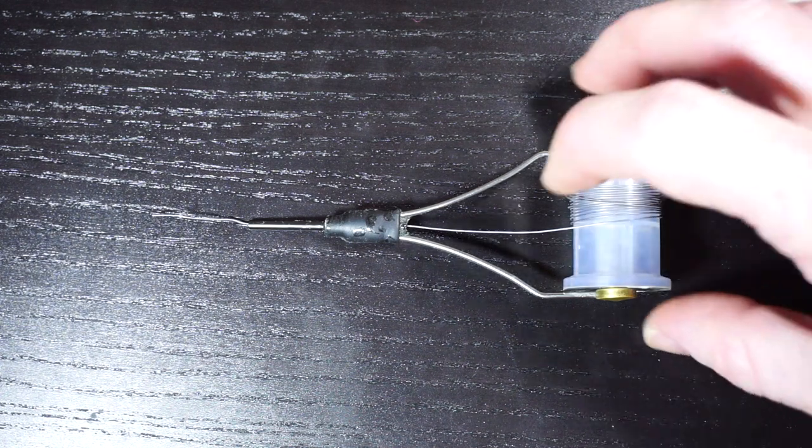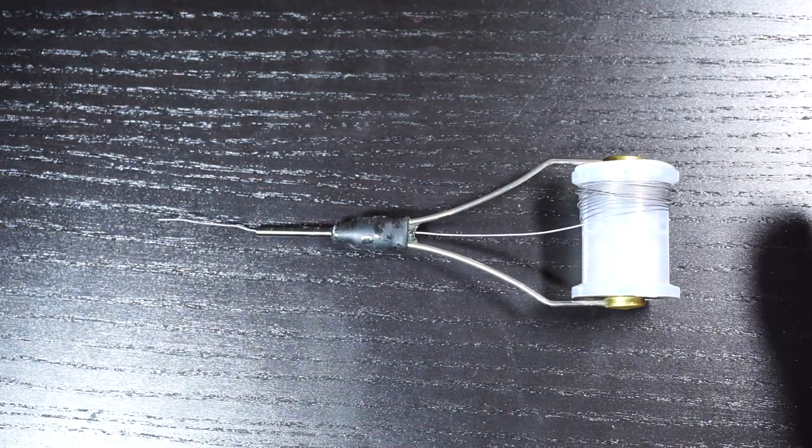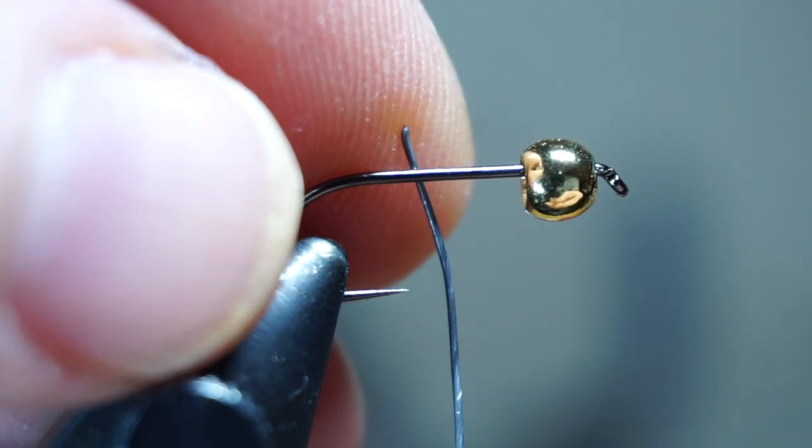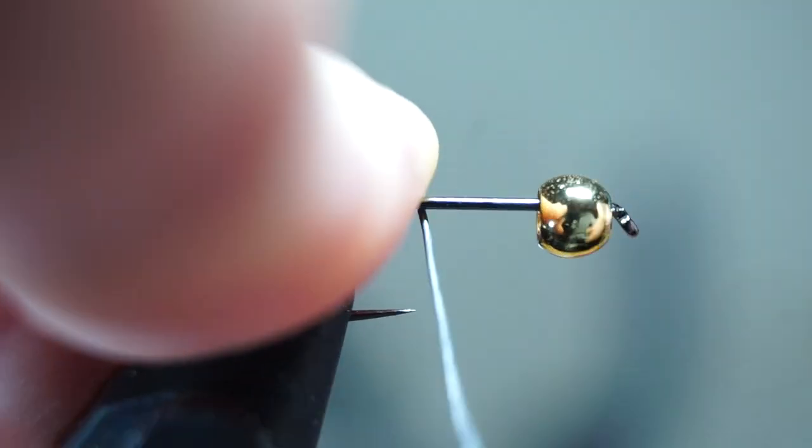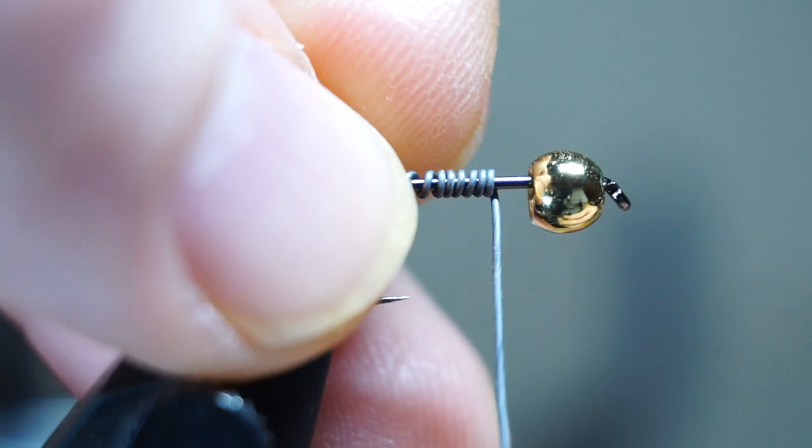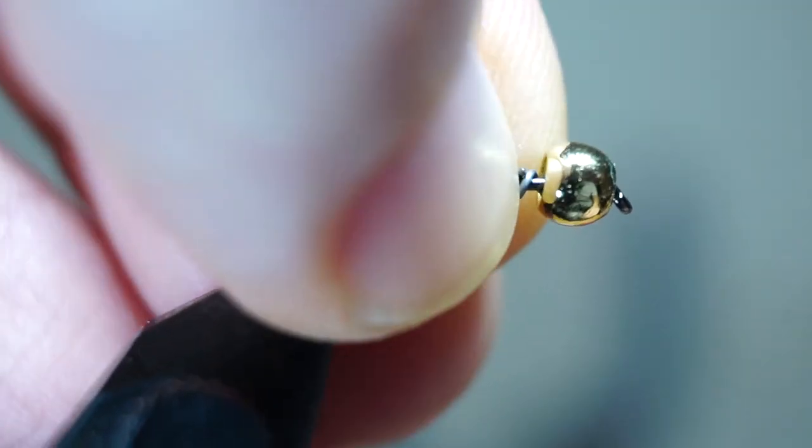After securing the hook to your vise you want some lead wire. I like putting it on a bobbin for less waste. Also the .015 size works for this hook and bead, but you can adjust accordingly. Make your desired amount of wraps with the lead wire. I did 8 here. If you want this heavier, make more. Just make sure it's enough to push up into the bead and stabilize it.